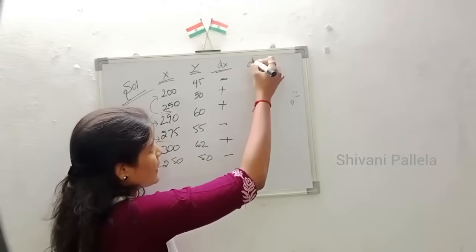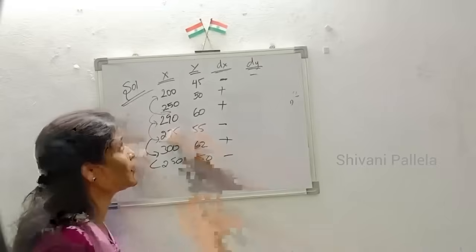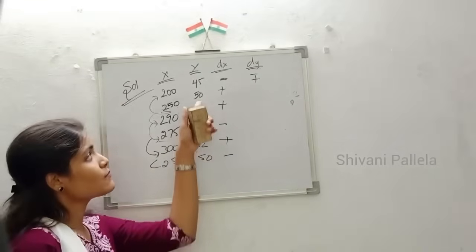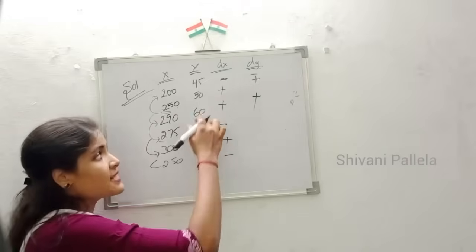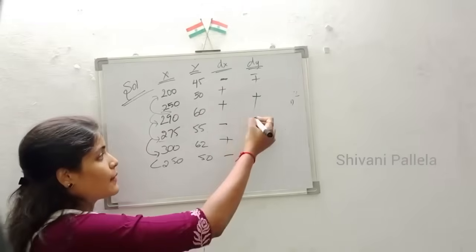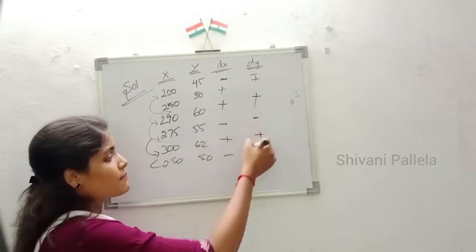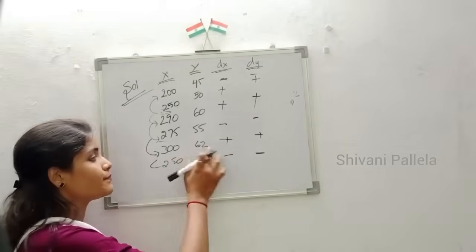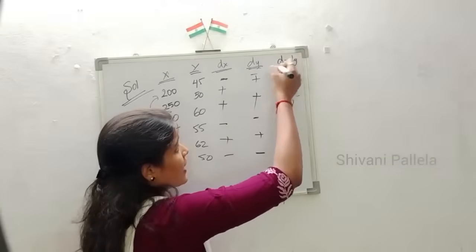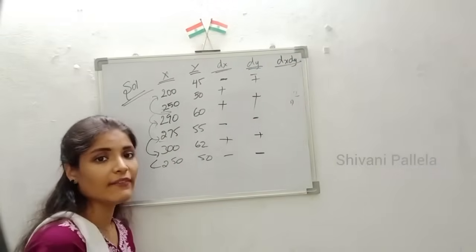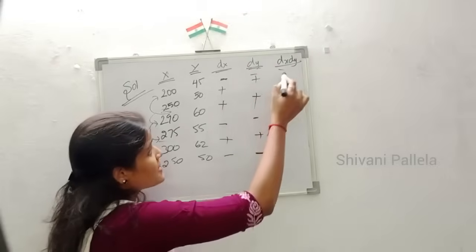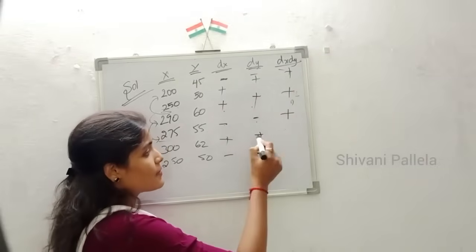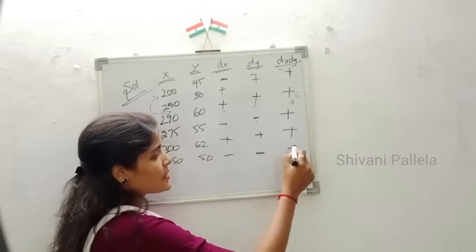For DY: the first value gets a hyphen. 50 is more than 45, so plus. 60 is more than 50, so plus. 55 is less than 60, so minus. 62 is more than 55, so plus. 50 is less than 62, so minus. Now we calculate the DX×DY column: plus×plus = plus, plus×plus = plus, minus×minus = plus, plus×plus = plus, minus×minus = plus.